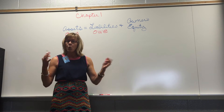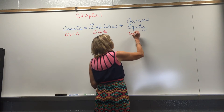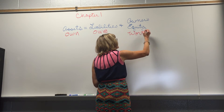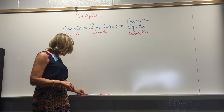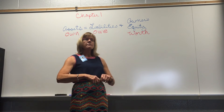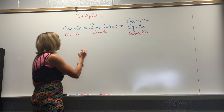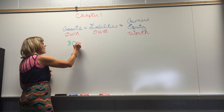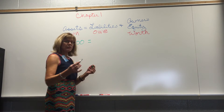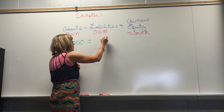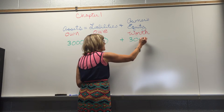Owner's equity is the worth of our business after you subtract what we owe from our assets. For example, if we're starting a brand new business and we put $3,000 into it, our business will have $3,000 in cash as an asset. If we haven't purchased anything yet, we owe zero, and our worth in the business would be $3,000.